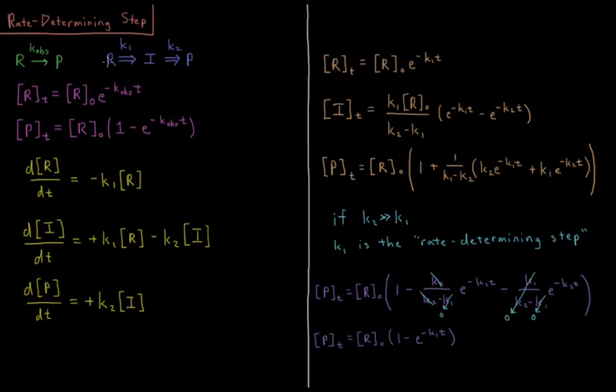k1 is a much slower reaction, so it takes a long time to build up a little bit of intermediate. But once we do, k2 is much higher, so this reaction proceeds very quickly. So any intermediate that gets produced is just immediately converted into product. So what would the rate law be in that kind of a case?